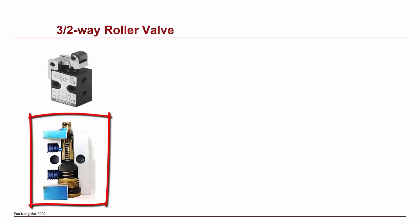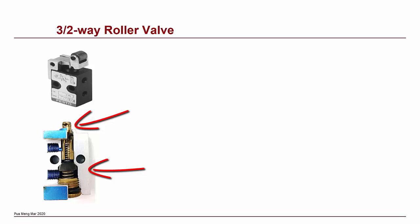This is the cross-sectional view of the 3-2-way roller valve, without the roller lever. Only the moving part and valve body are shown.